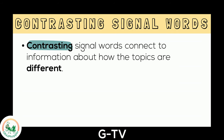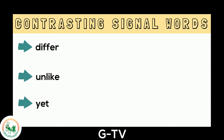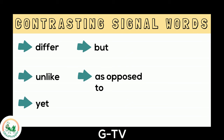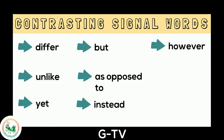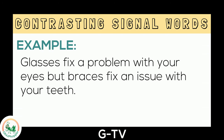Contrasting signal words connect to information about how the topics are different. Here are some signal words for contrasting: differ, unlike, yet, but, as opposed to, instead, however, while, and on the contrary. In this sentence, the author used the signal word 'but' to contrast.